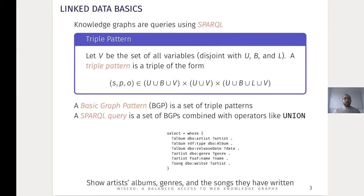To query knowledge graphs, we depend on SPARQL. SPARQL is a standard query language for RDF. A SPARQL query is a set of basic graph patterns where each basic graph pattern consists of a set of triple patterns. Here we have an example of a SPARQL query where we tried to query DBpedia to find the list of artists, albums and genres and the songs that they have written.